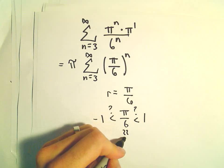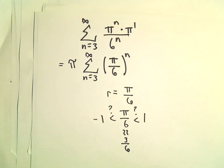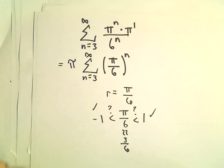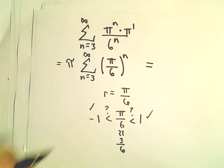so this is roughly 3 over 6, or a half. And that's certainly going to be in between positive 1 and negative 1. So this is going to be a convergent geometric series.